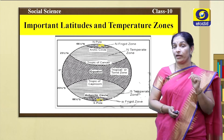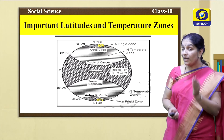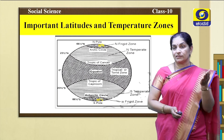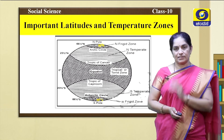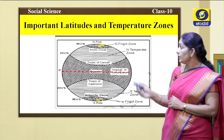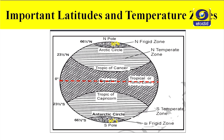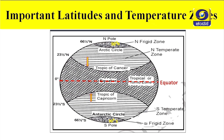Children, now let us know about the important latitudes and temperature zones. The knowledge of important latitudes and the temperature zones is very important to study the other lessons. The 0 degree latitude is called the equator, the 23 and a half degree north latitude is called the Tropic of Cancer, and 23 and a half degree south latitude is called the Tropic of Capricorn.